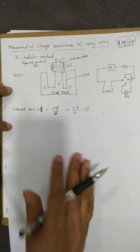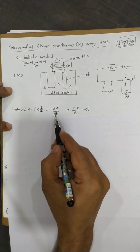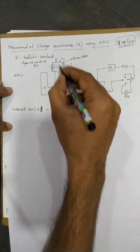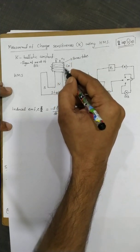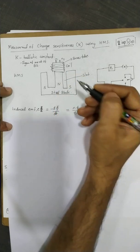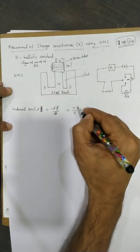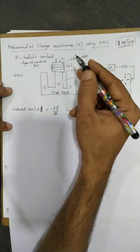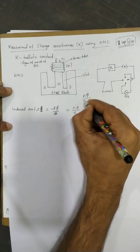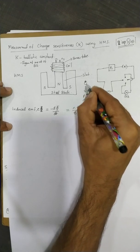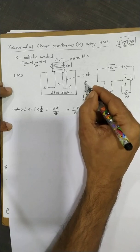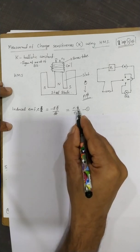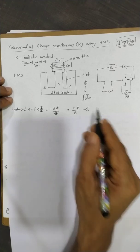The induced EMF is equal to minus dΦ/dt. When the coil is pulled out, the flux changes from a maximum value Φ to zero. For a coil of n turns, the total flux linkage is nΦ. Therefore, the change in flux is from 0 to nΦ, so dΦ/dt equals nΦ divided by t. This is equation 1.